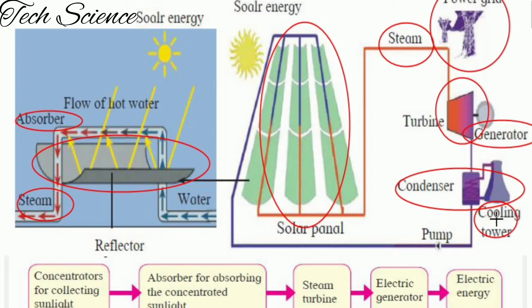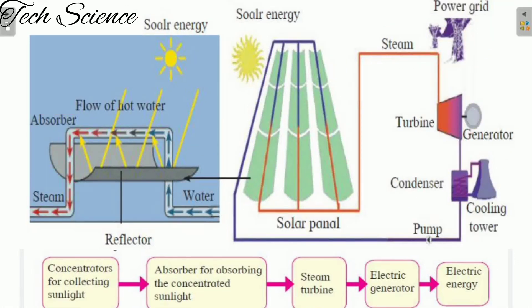This water moves towards the cooling tower after absorbing the heat. When it reaches the cooling tower, the heat energy is released and hot vapors are released through the cooling tower. Then a pump is used to move the same water for recycling purposes, and this water is again used in the solar panel to convert it into steam.